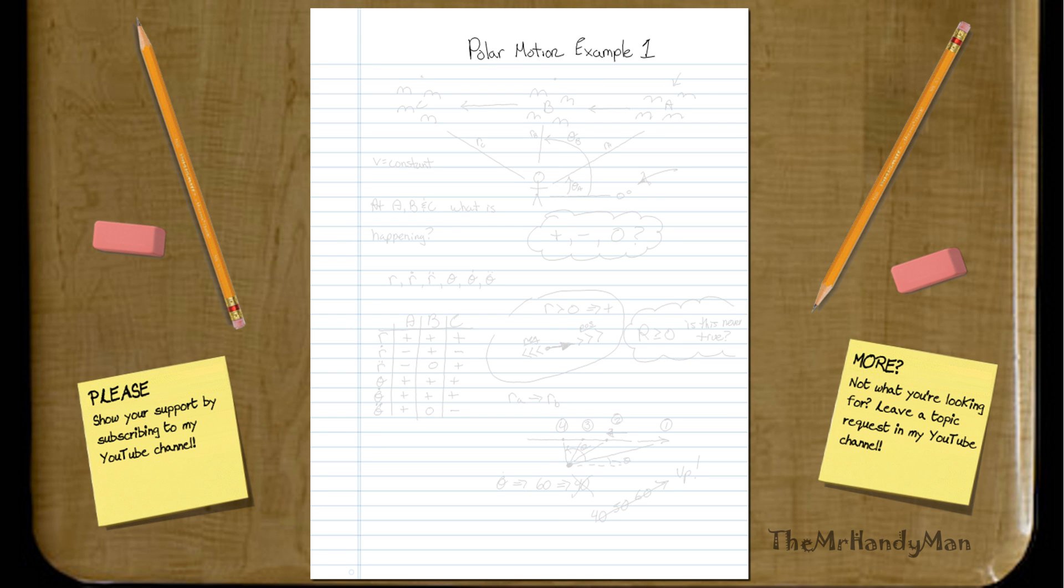This is Polar Motion Example 1, and what we're going to be looking at is basically just a quick little overview. I'm just going to start off with Polar Motion because it's actually one of the more complicated styles. But let's just get a feel, an intuitive feel, for when things are increasing and decreasing, and then we'll actually start working into numbers.